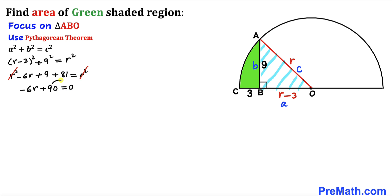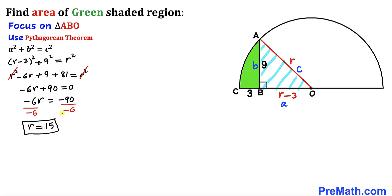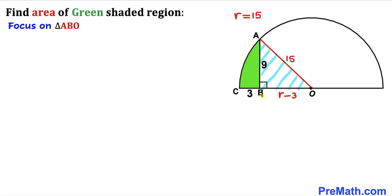Moving 90 to the other side gives negative 6r equals negative 90. Dividing both sides by negative 6, our radius r turns out to be 15 units. Therefore side length OB is 15 minus 3, which gives us 12 units.